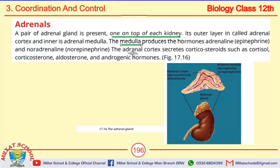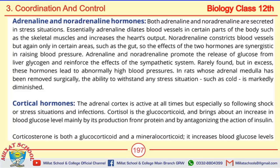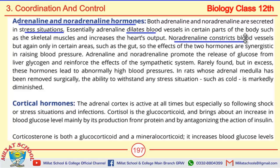The basic thing is that the adrenal cortex releases corticosteroids, of which 4 come. You can see in the diagram that adrenals are present one on top of each kidney. Now regarding adrenalin and noradrenalin: adrenalin dilates blood vessels, while noradrenalin constricts blood vessels — this is one of the key differences between the two. It may be asked in the form of MCQs.